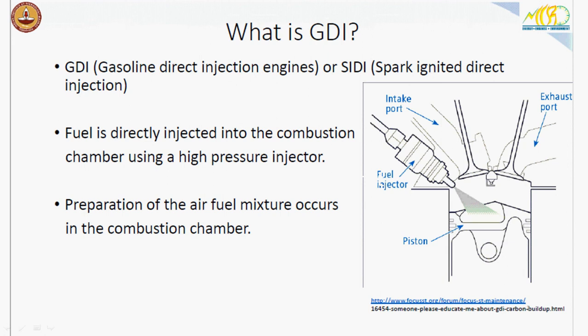Coming to GDI, which is the most advanced version of petrol engine. GDI is also called DISI by several researchers, which means direct injection spark ignited engines. In this engine, fuel is directly injected into the combustion chamber. The air-fuel mixture preparation occurs right inside the combustion chamber during the two strokes of suction and compression.